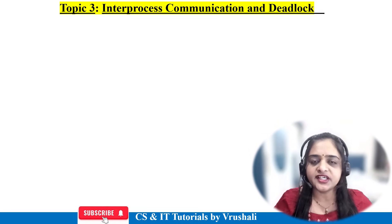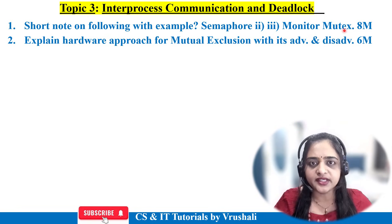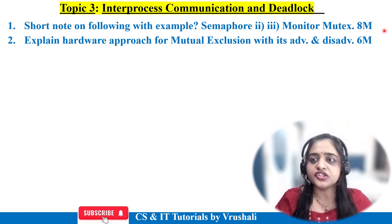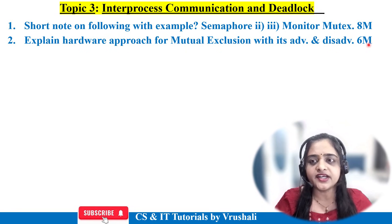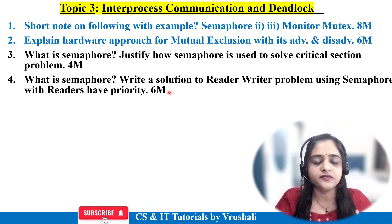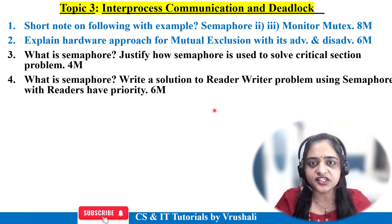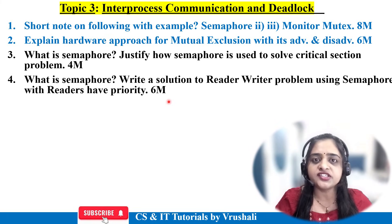Now the next unit is inter-process communication and deadlock. The first and most important question is: write a short note on semaphore, monitor, and mutex — explain all three terms with a diagram and short explanation for eight marks. Otherwise they have asked: explain the hardware approach for mutual exclusion with its advantages and disadvantages for six marks. Next questions are based on semaphore solutions, where you have to write C or C++ programming code. Questions include: what exactly is a semaphore and how is it used to solve the critical section problem, or write a solution to the reader-writer problem using semaphore. In both cases, you must include the code with justification. This kind of question is generally asked for four to six marks.